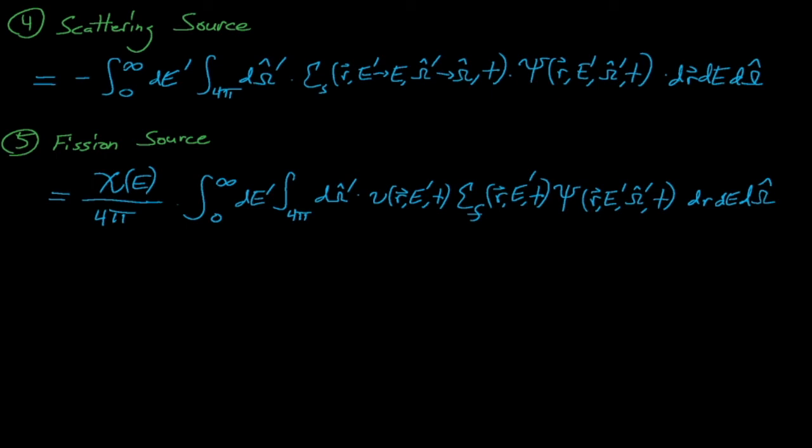Multiplying this fission neutron production rate by χ(E)/4π yields the expected number of fission neutrons that are born with energy E and with direction Ω. This χ/4π term is really just the probability that fission neutrons will have some energy E and direction Ω when they are emitted. This makes sense since χ(E) is the probability distribution for the emission energy of fission neutrons and 1/4π is the probability distribution that an isotropic fission reaction will emit neutrons in some direction.